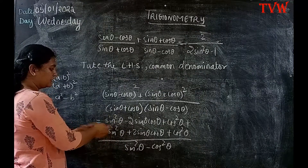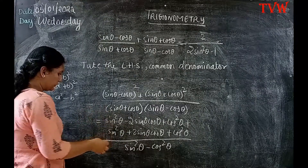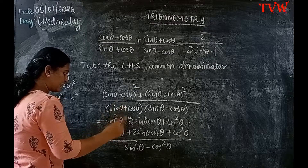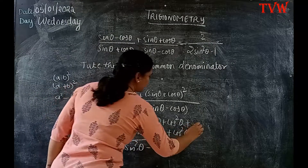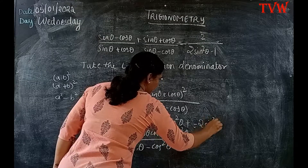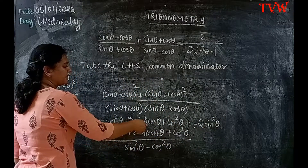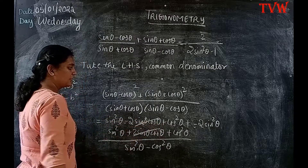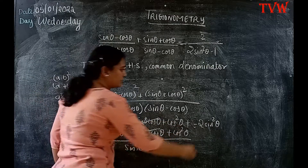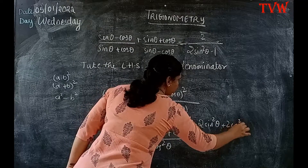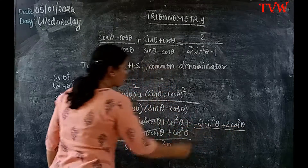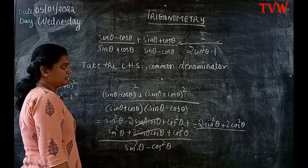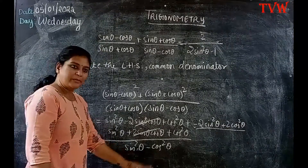Now let us simplify the numerator. sin²θ + sin²θ = 2 sin²θ. The −2 sin θ cos θ and +2 sin θ cos θ cancel. cos²θ + cos²θ = 2 cos²θ, all divided by sin²θ − cos²θ. We know that cos²θ = 1 − sin²θ.